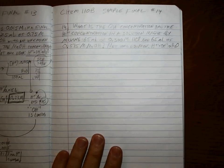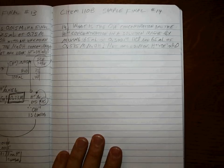What is the hydroxide concentration and the H-plus concentration in a solution that's made by mixing 65 milliliters of 0.300 molar HCl and 65 milliliters of 0.375 molar sodium hydroxide?